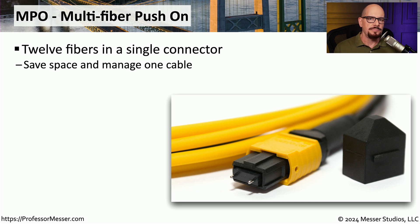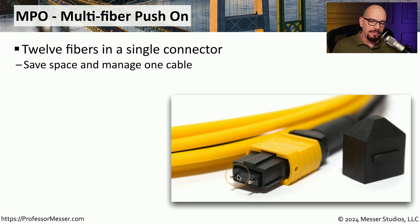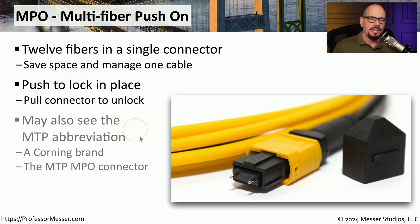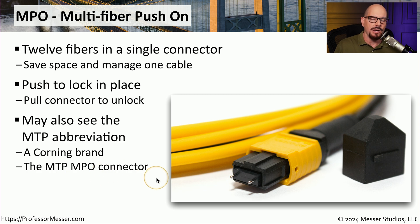One of the challenges with the connector types we've seen so far is that those fiber connections take up a lot of real estate. It would be a lot more efficient if we could put more fiber into a smaller connection. There is a connector type for that called the MPO, which is multi-fiber push on. Inside the MPO are 12 individual fibers contained in that single cable connection. This also has a lock in place very similar to the SC connector, where you push it in and pull it out slightly to unlock it from the interface. You might also see this connector referred to as an MTP — a name provided by Corning, who refer to it as an MTP MPO connector.